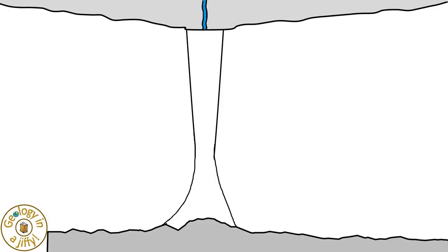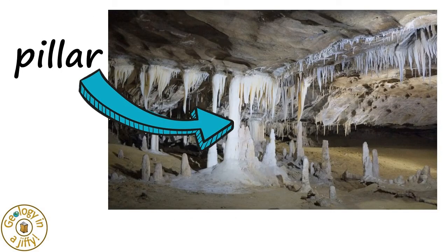Sometimes the stalactite on the ceiling and its matching ground-based stalagmite grow so long and tall they can join up, forming a column or pillar.